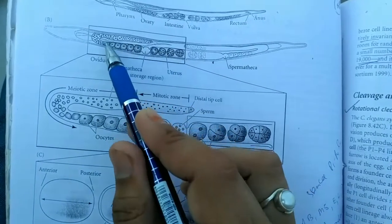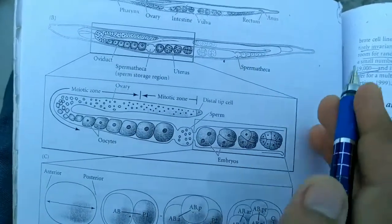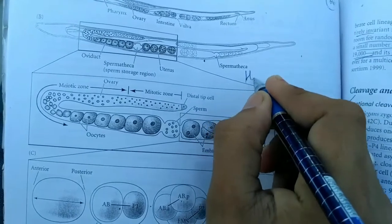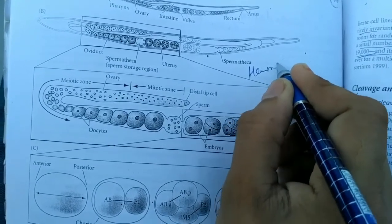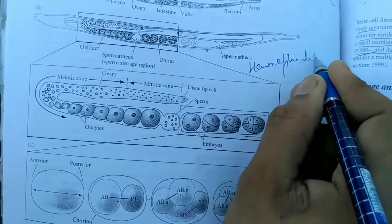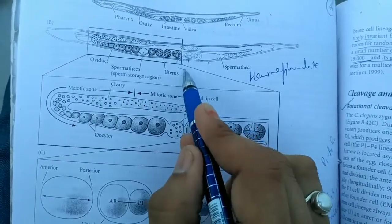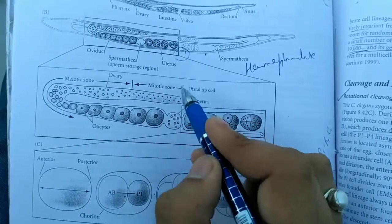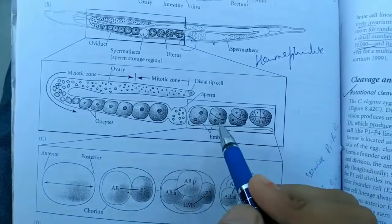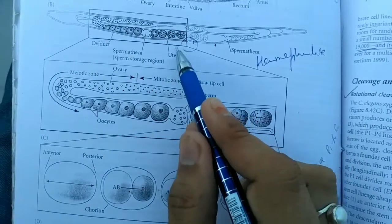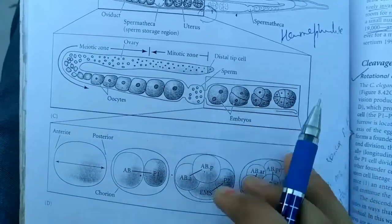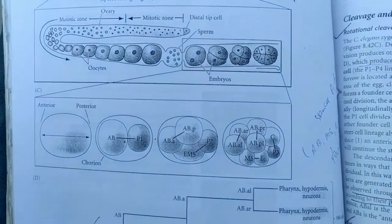The reproductive part is a U-shaped gonad and it is hermaphrodite, meaning male and female occur in the same organism. Here is the vulva, the structure for egg laying. The fertilized eggs are laid here in the developmental stage and further they develop on the exterior side.